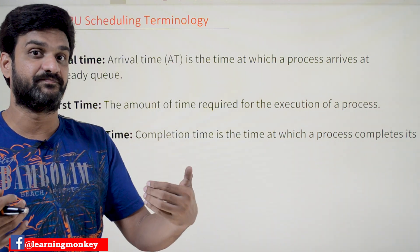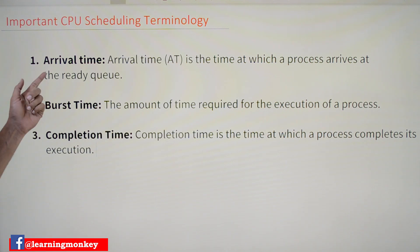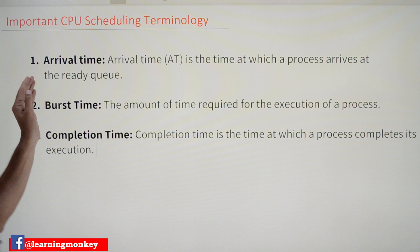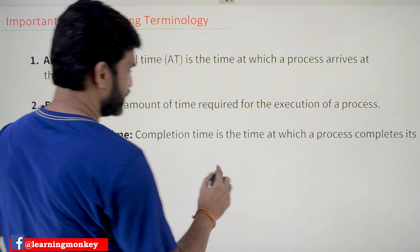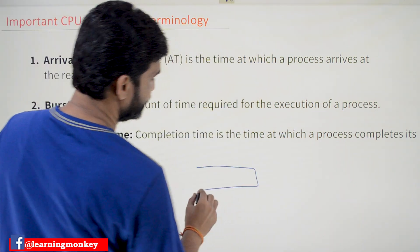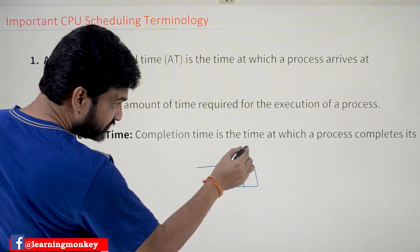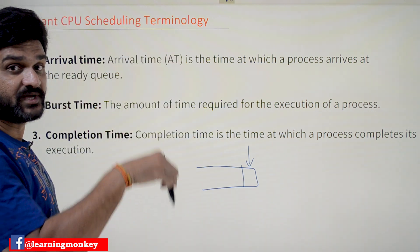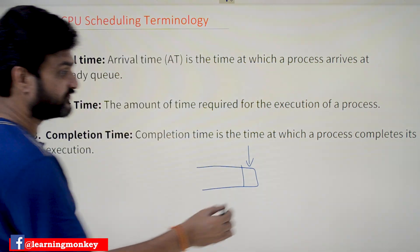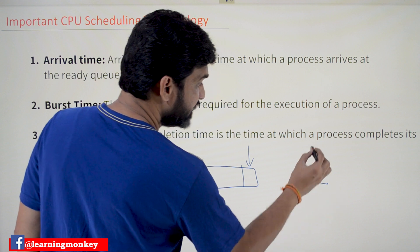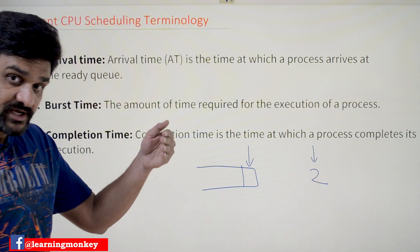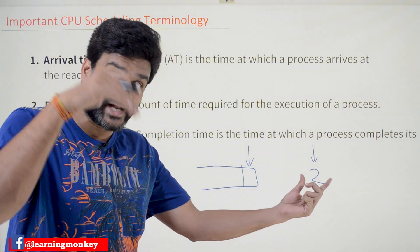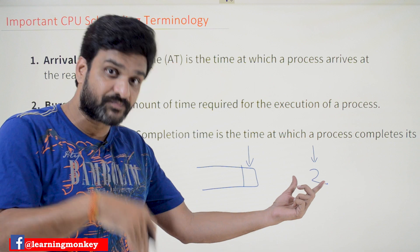The first term is arrival time. Arrival time is the time at which the process arrives at the ready queue. For example, if a value of two is given, it means that at the second second, the process has arrived into the ready queue. That point of time is what we call arrival time.